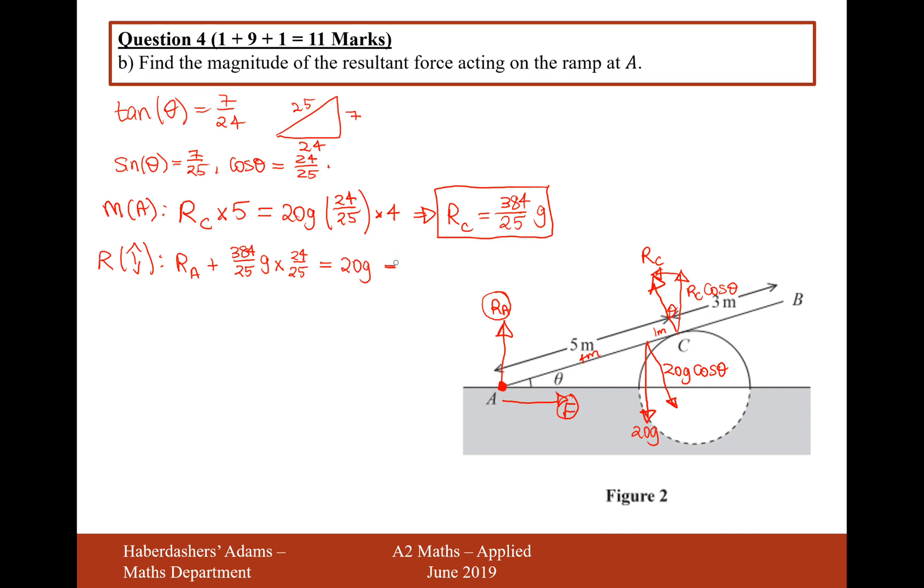Let's work out what RA is equal to. RA is going to equal 20 minus 384 divided by 25 times 24 over 25, all multiplied by G. So that's going to be 3284 over 625 lots of G. We've done 20 take away this expression to give us RA.